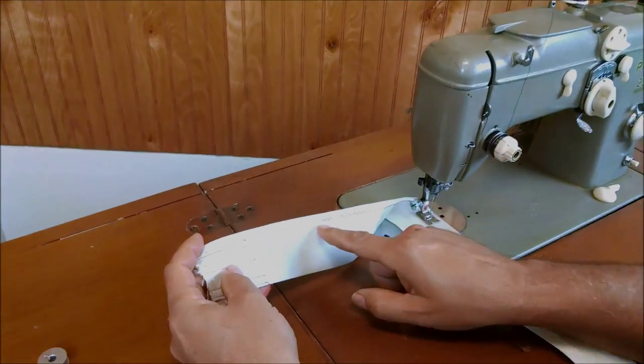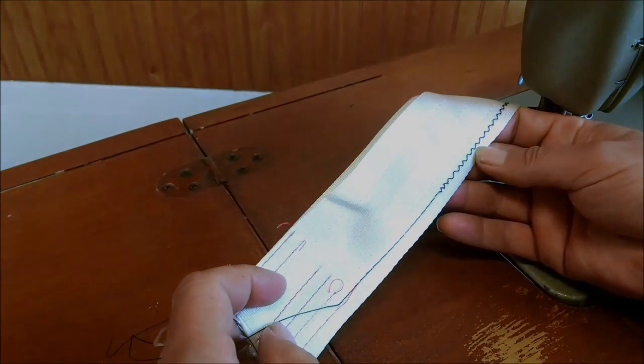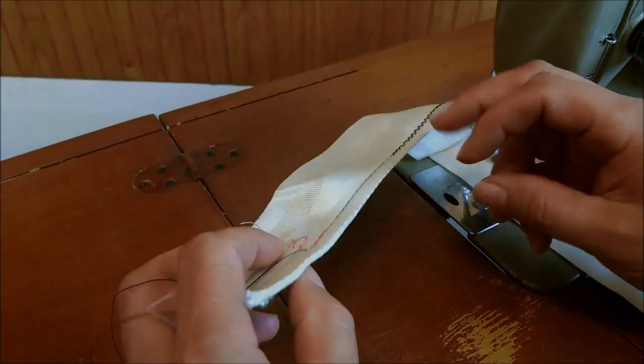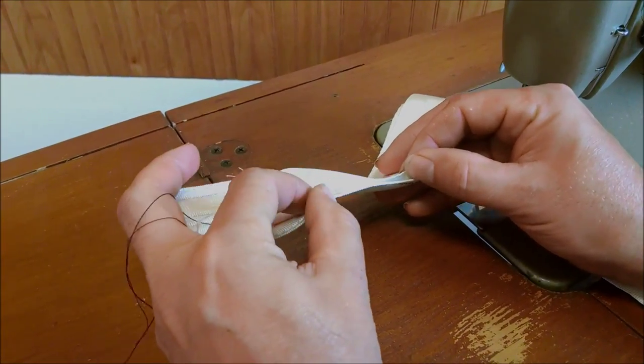So we went from straight stitch to zigzag, and there's our back using a little thicker thread on the back. And that's through two layers of seat belt material. This machine does just fine.